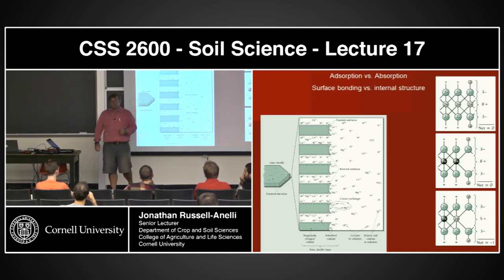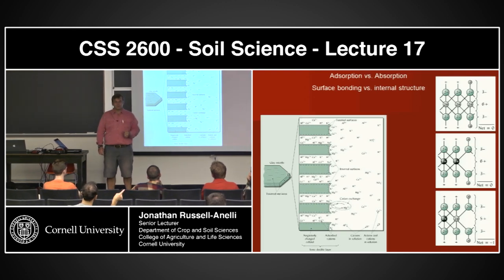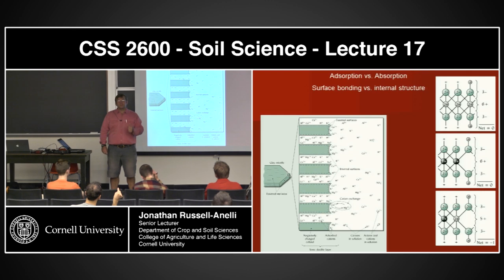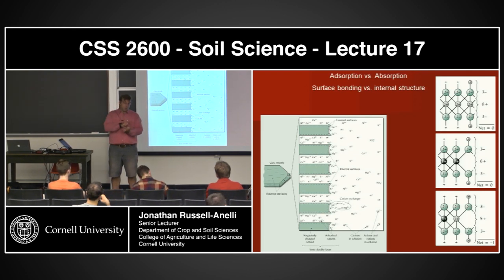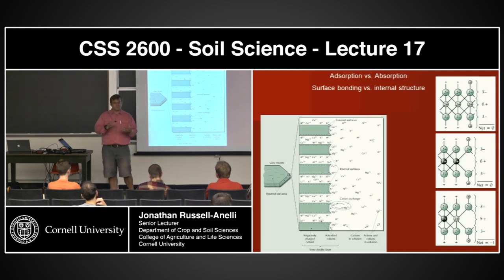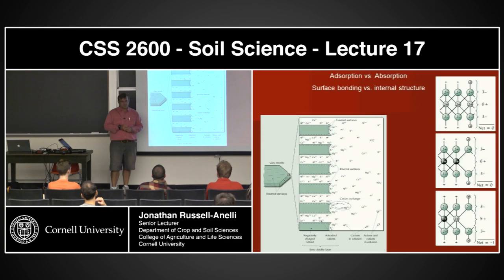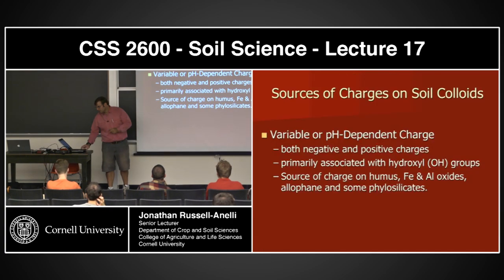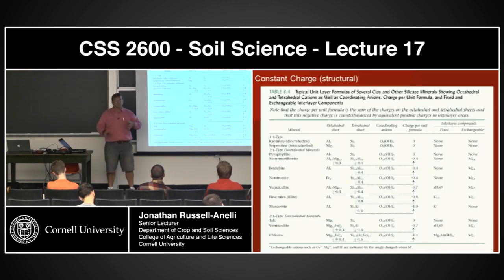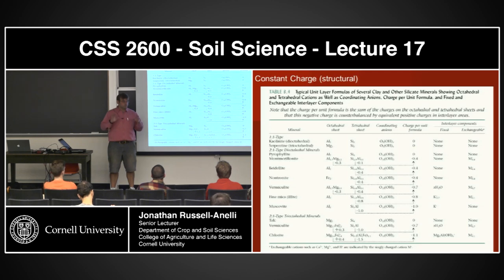Is isomorphic substitution the addition of impurities or making it more pure by weathering? Isomorphic substitution is the swapping of ions. In some scenarios it's making it more impure; in others it's actually purifying it. That's the source of the permanent charge — and it will not change until that material has weathered away or been decomposed.